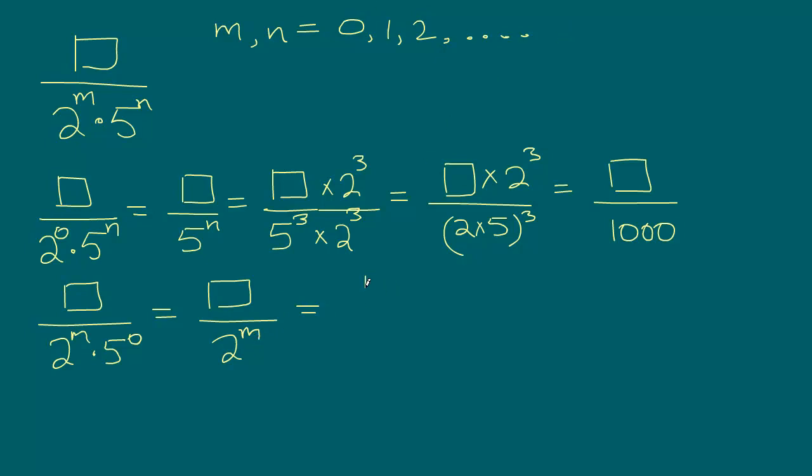So if we take some number divided by 2 to the power 6, so if this is the case, we can multiply this by 5 to the power 6 and numerator by 5 to the power 6. And the reason we are doing that is we are trying to make this 10 to the power 6.